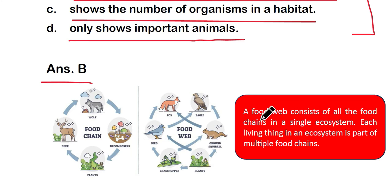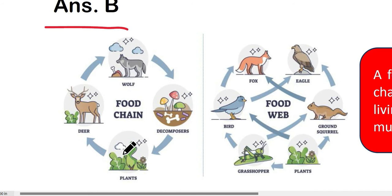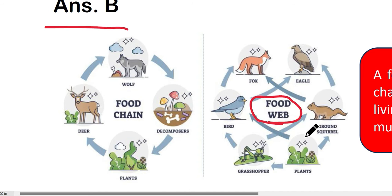A food web consists of all the food chains in a single ecosystem. Each living thing in an ecosystem is part of multiple food chains. In a food chain, it starts with a decomposer — using decomposers' energy, plants grow; plants are eaten by deer; deer can be eaten by wolves; wolves when they die decompose and nutrients return to the soil. Multiple such food chains together form a food web.